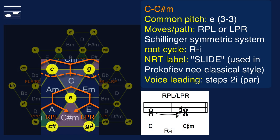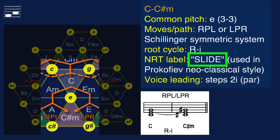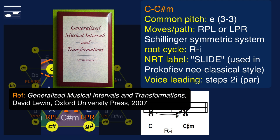In option 3, when the common note is the pitch E, things definitely become more interesting. We are connecting C major with C sharp minor, either through the RPL or LPR transformation. This is a connection that does not occur in diatonic harmony — we are entering new terrain, with a symmetric harmony system root cycle R-I, as the root moves up a semitone. We see a parallel perfect fifth in the voice leading. This transformation has received a special label: it is called the slide transformation, discussed in David Lewin's book, and used frequently by Sergey Prokofiev in his neoclassical style compositions.